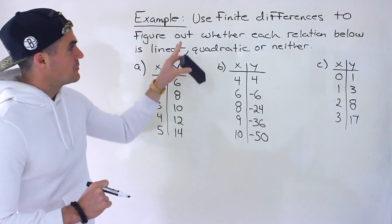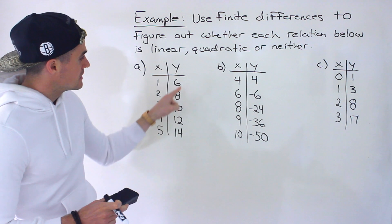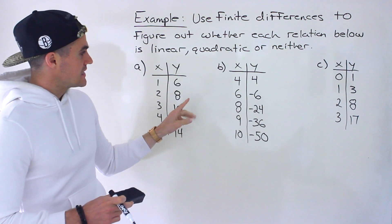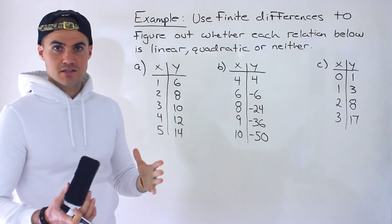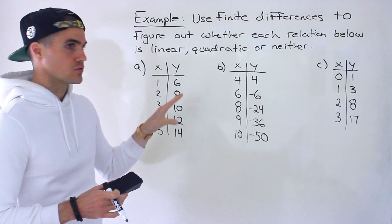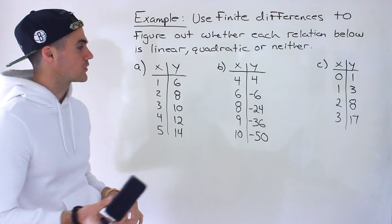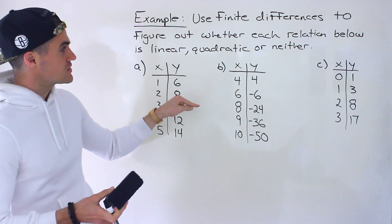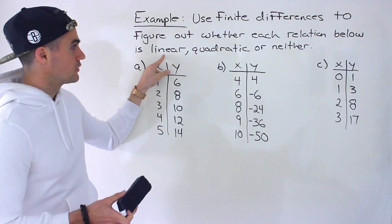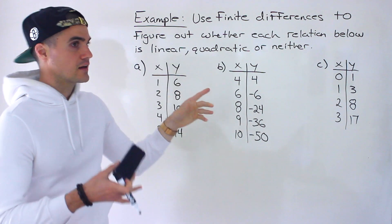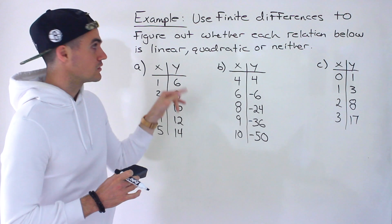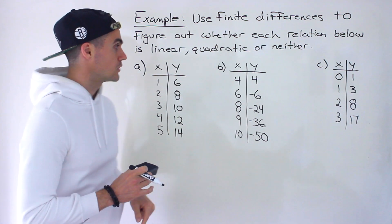What we mean by finite differences is we want to start taking the differences between the y values, and then seeing whether the first or second differences are constant. If the first differences are constant, the relation is linear. If the second differences are constant, it's quadratic. And if neither the first nor second differences are constant, then it's neither a linear nor quadratic relation.